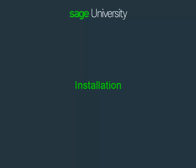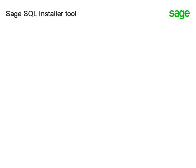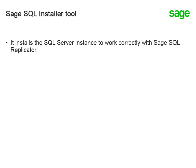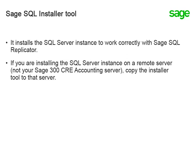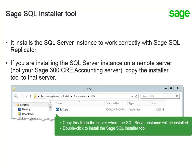Next, let's examine the installation process. SQL Replicator requires a dedicated instance of SQL Server, which you can install on your Sage 300 Construction and Real Estate Accounting Server or on a different server. Your Sage 300 CRE software comes with the Sage SQL Installer tool. We strongly urge you to use this tool to install the SQL Server instance so that it works correctly with Sage SQL Replicator. If you're installing the SQL Server instance on a server other than your Sage 300 CRE Accounting Server, install the Sage SQL Installer tool on that machine. You can do so by finding the suzy.exe file in the extracted installation files for Sage 300 Construction and Real Estate and copying that file to the server where you will install the SQL Server instance.